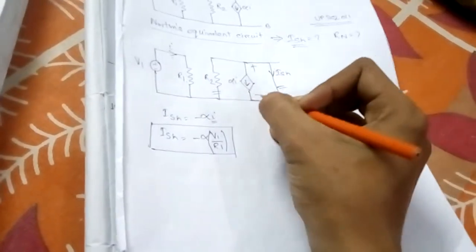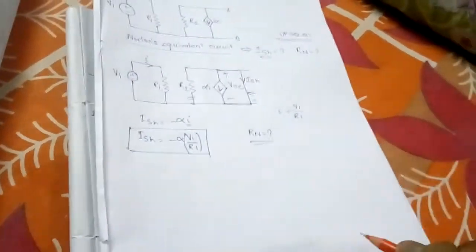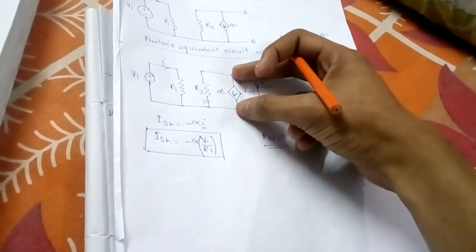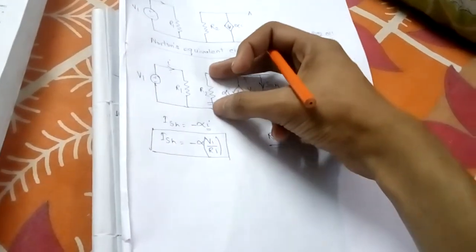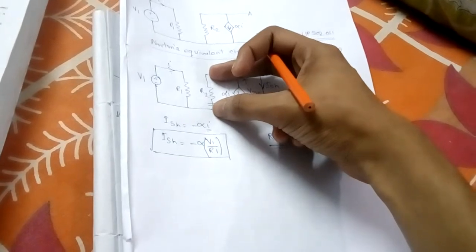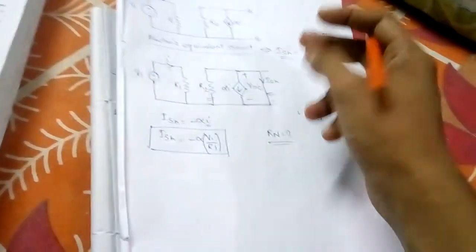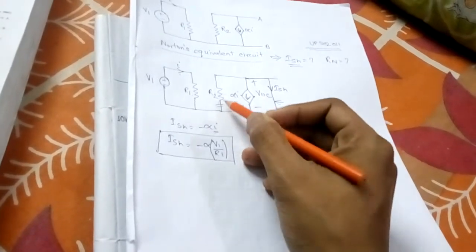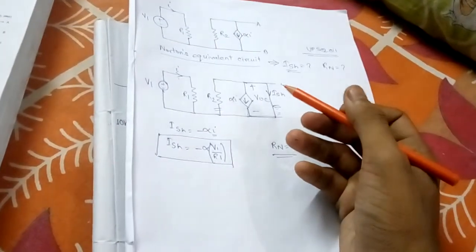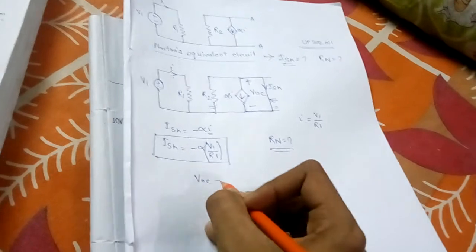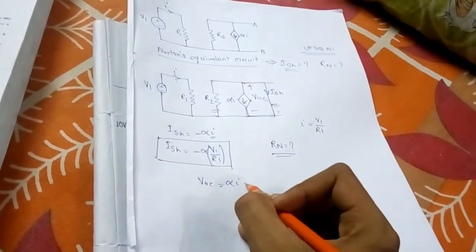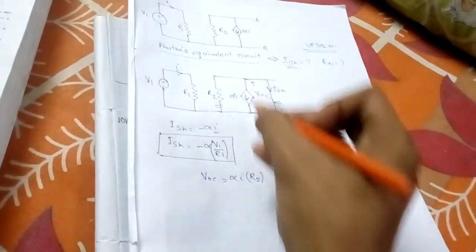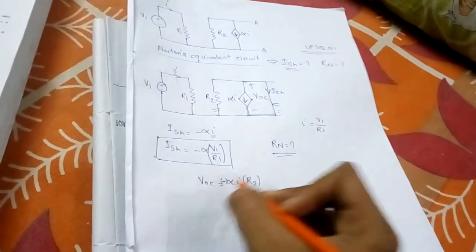Now suppose this is V_OC. V_OC will be the voltage across this current source as well as across this resistance. Since the terminal is open-circuited, the alpha·I current will flow through R2. So V_OC will be alpha·I into R2, and since it is opposite in direction, there will be a negative sign.